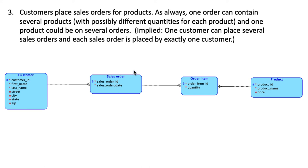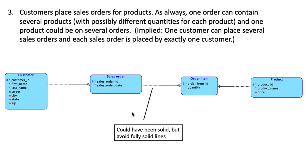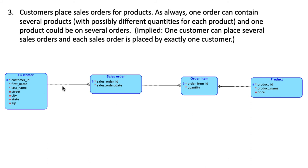We inferred that one customer may place several sales orders, so there is a one-to-many relationship between Customer and Sales Order. Every sales order is placed by only one customer — a sales order cannot be jointly placed by several customers. You can't have a sales order which was not placed by a customer, which is why this part of the line is solid, and that makes sense.